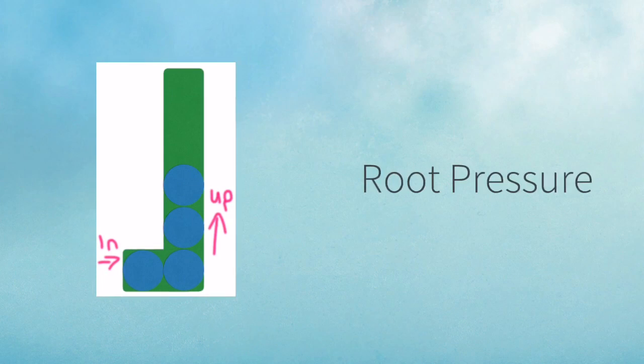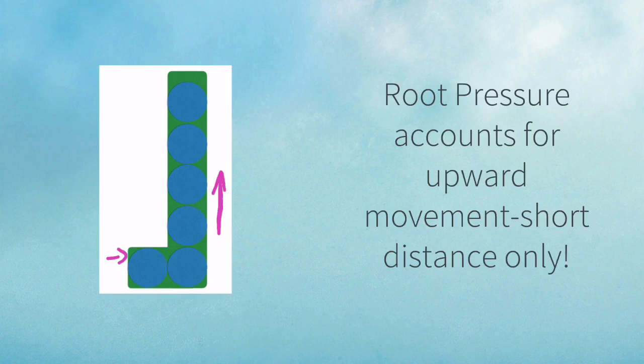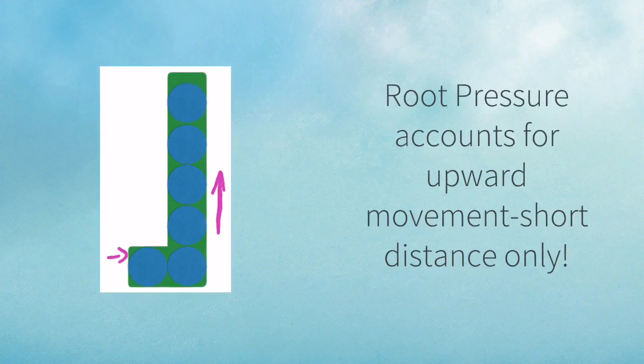This continual movement of water molecules into the xylem serves to push those already there further upwards, and this is known as root pressure. Root pressure can really only account for the upward movement of water over relatively short distances, approximately a metre or thereabouts.